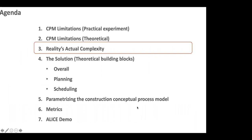Now we're going to move into reality's actual complexity. We've looked at the practical limitations of doing it by hand and the theoretical CPM limitations — the tool forces you to use precedence constraints to resolve resource constraints. Now let's take a look at what else you need to model.